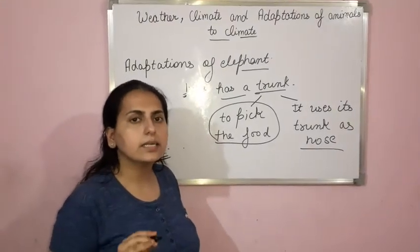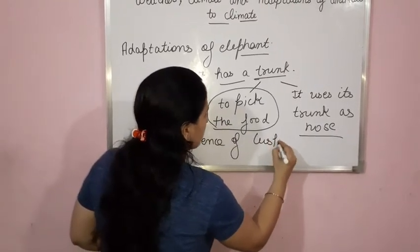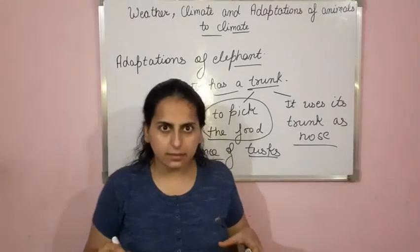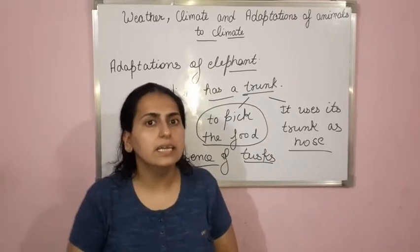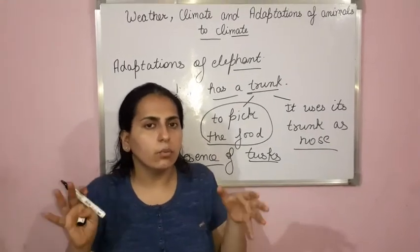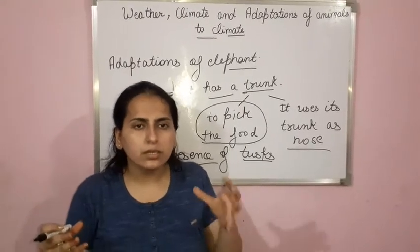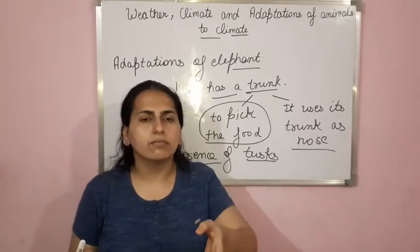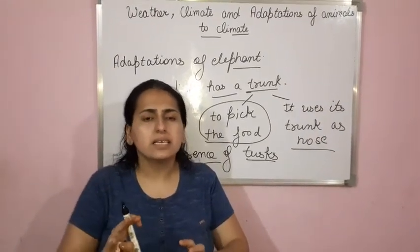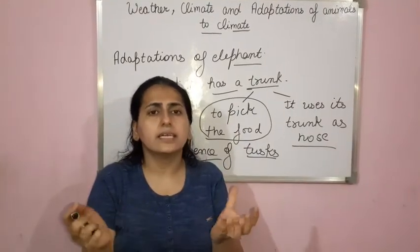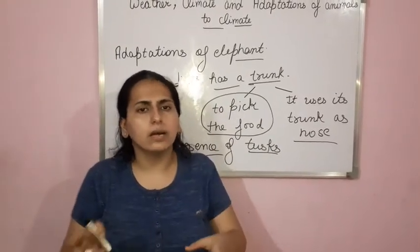The second adaptation is the presence of tusks. These tusks are the modified teeth. They are used to tear the branches of the tree, or you can say, to tear the bark of the tree. Bark is that brownish colored structure that is present over the stem. So tusks are used to tear the bark of the tree.